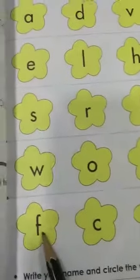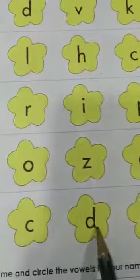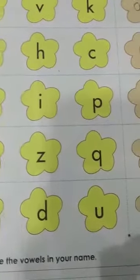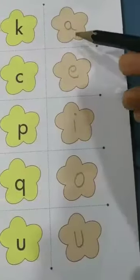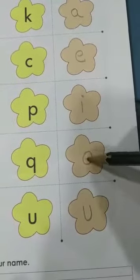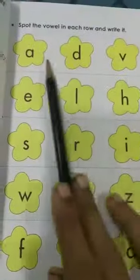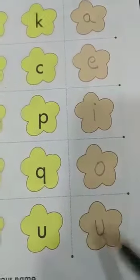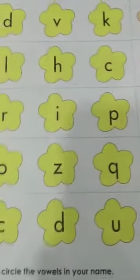Next: W, O, Z, Q. Which is the vowel here? O. And the next one: F, C, D, U. Which is the vowel here? It is U. So the vowels are A, E, I, O, U — you took out all the vowels in each row and wrote them. So you got A, E, I, O, U. These are the vowels.